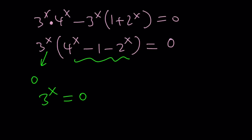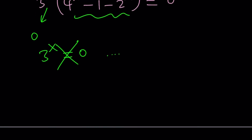How about complex values? It can't be 0 for complex values either - something to think about. But we don't have any real solutions from that factor, so we're going to discard it and look at the second one: 4 to the x minus 1 minus 2 to the x equals 0. Even though everything is exponential, we can turn this into a quadratic equation by way of substitution.